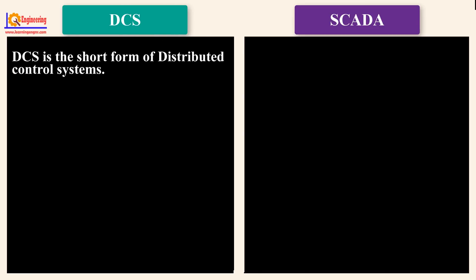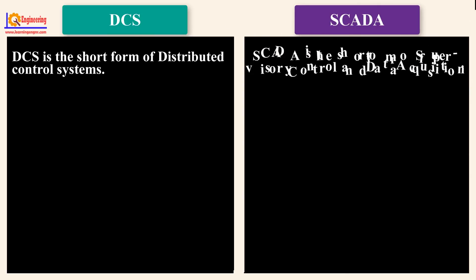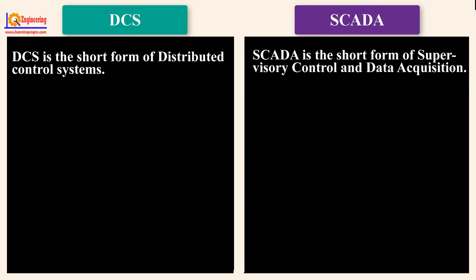Now we will see some differences between DCS and SCADA systems. DCS is the short form of Distributed Control System. SCADA is the short form of Supervisory Control and Data Acquisition.